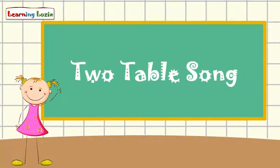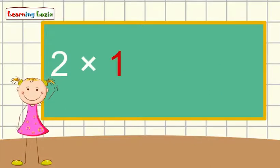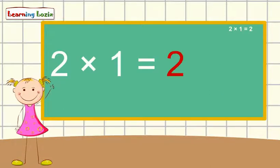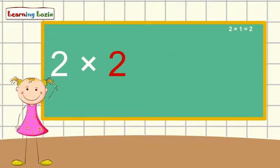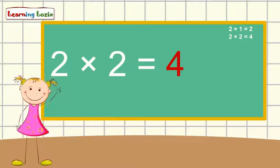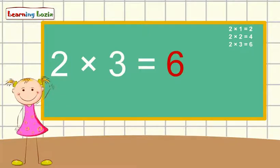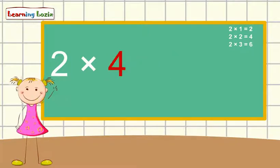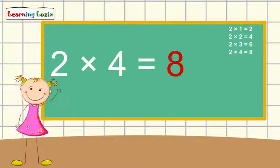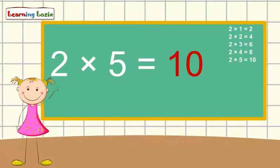Let's sing it one more time. Two times one is two, two times two is four, two times three is six, two times four is eight, two times five is ten.